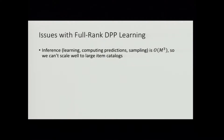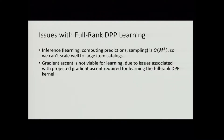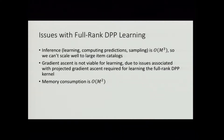Let's look at some issues with the traditional approaches to learning full-rank DPP models. One important issue is that inference operations — learning, computing predictions, and sampling — are all cubic in the size of the item catalog, which won't scale well for large catalogs. Also, standard gradient-based learning approaches like gradient ascent typically fail because of the need to perform projections during gradient ascent to maintain the positive semi-definite constraints on the L matrix. Another issue is that memory consumption is quadratic in the size of the catalog, which is also problematic for large item catalogs.